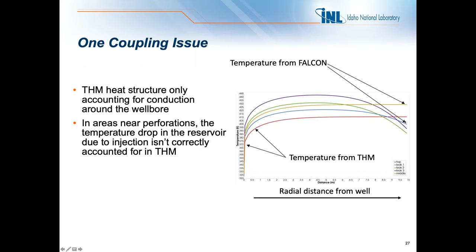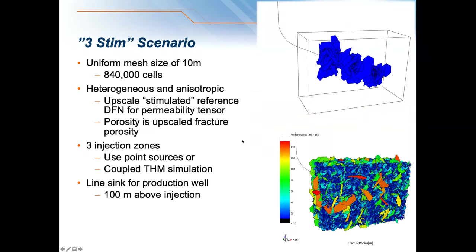We're working on this issue to figure out different ways to address the temperature gradient where flow should be. If there is a gradient from THM moving toward Falcon, it does not go into the Falcon simulation — this is a one-way coupling here; THM takes temperature from Falcon but only gives temperature back from the fluid.